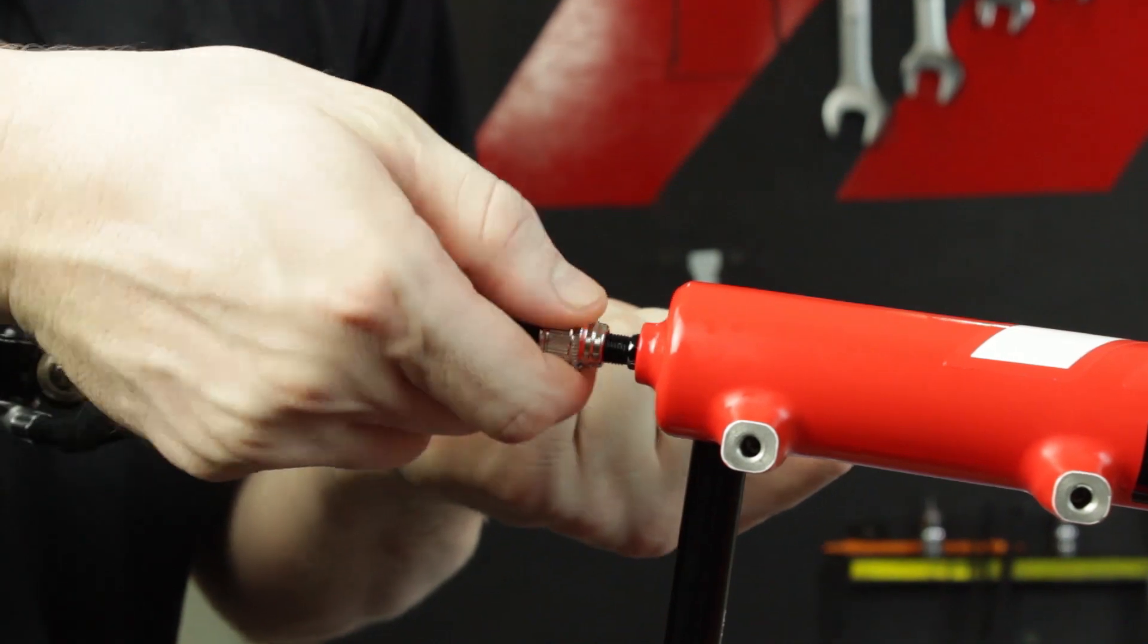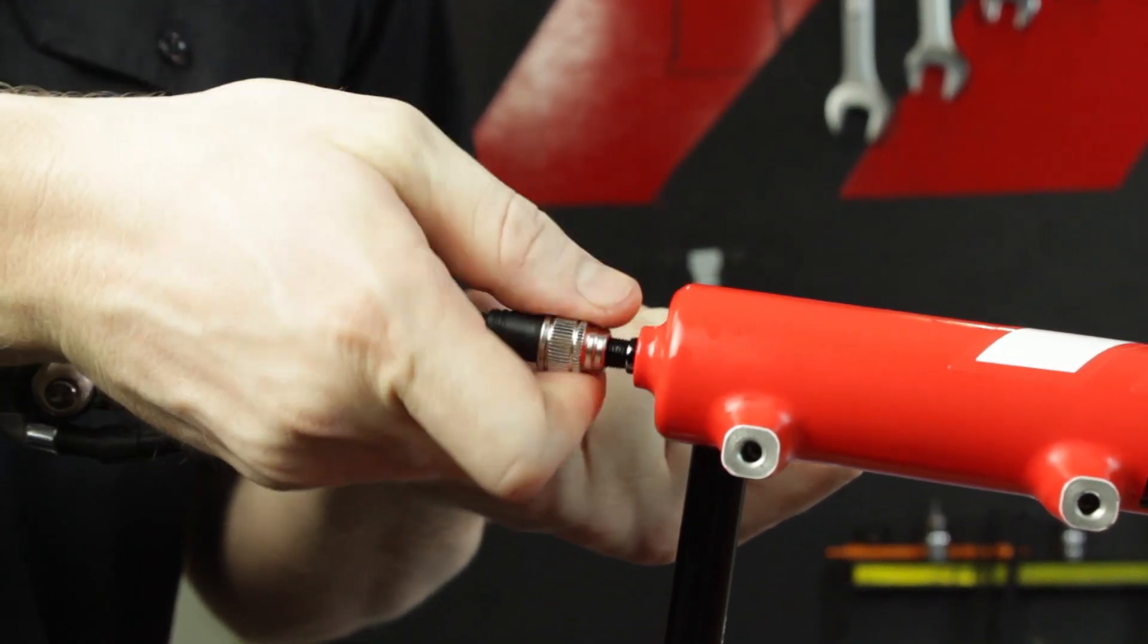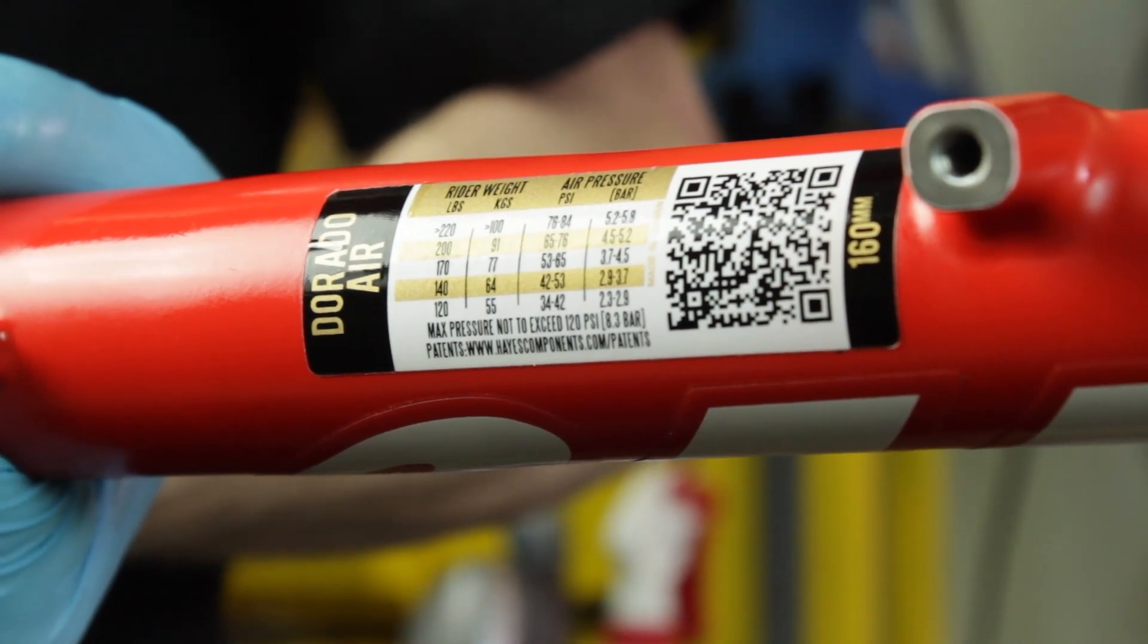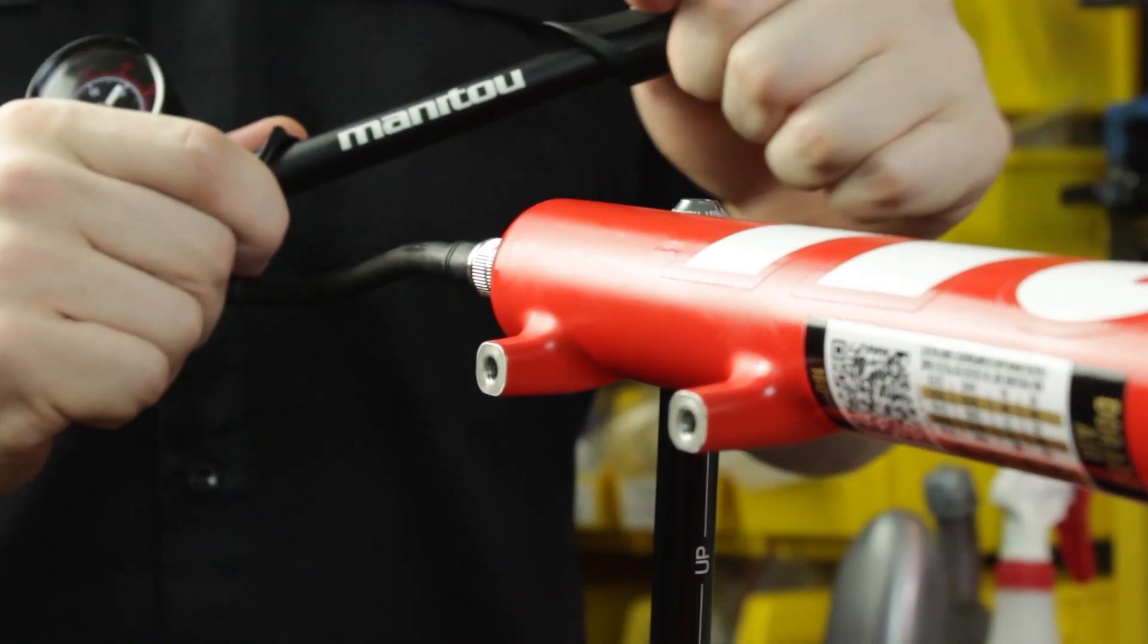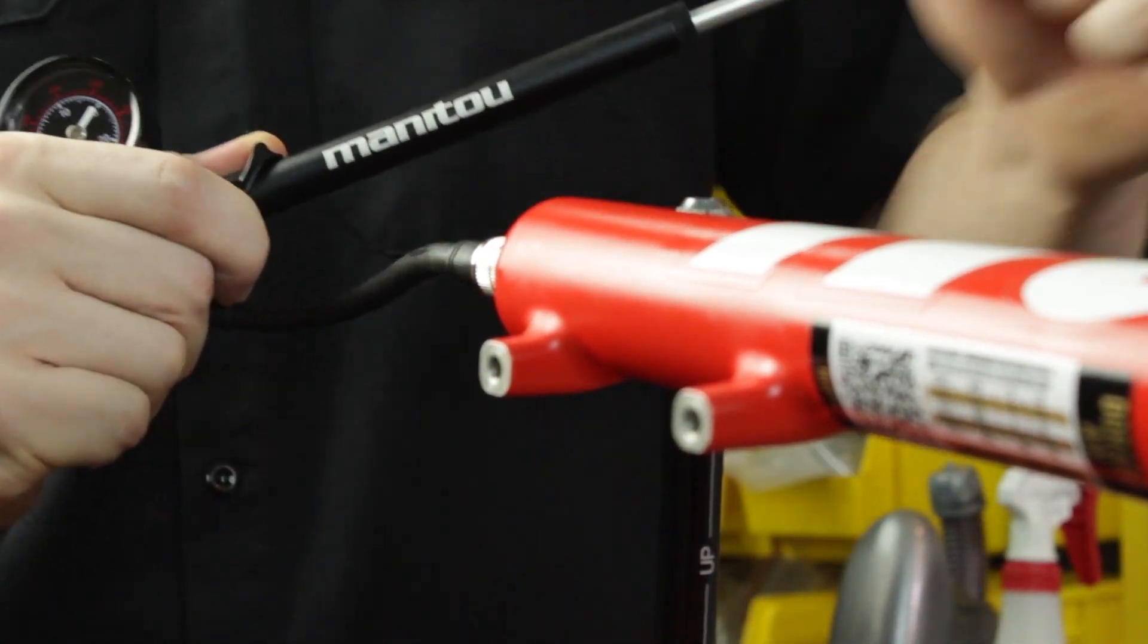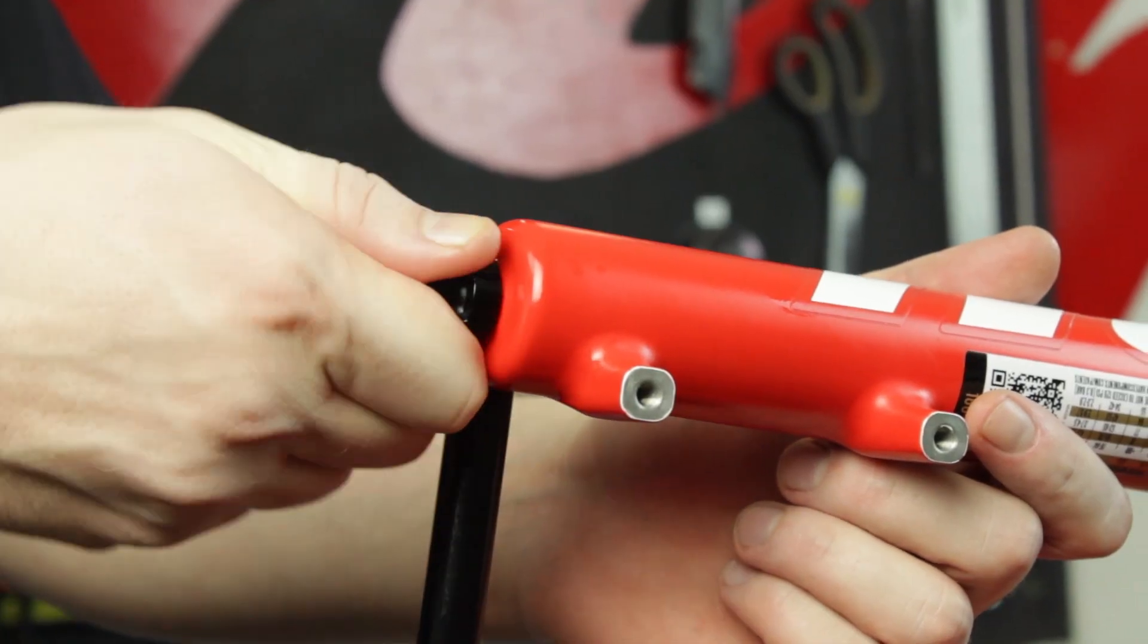Double check to make sure the fork is fully extended by attaching a pump and pulling on the outer casting. Using the weight to pressure chart found on the Matic or at manitoumtb.com, charge the Matic with the appropriate amount of air to your weight. Reinstall the air valve cap finger tight.